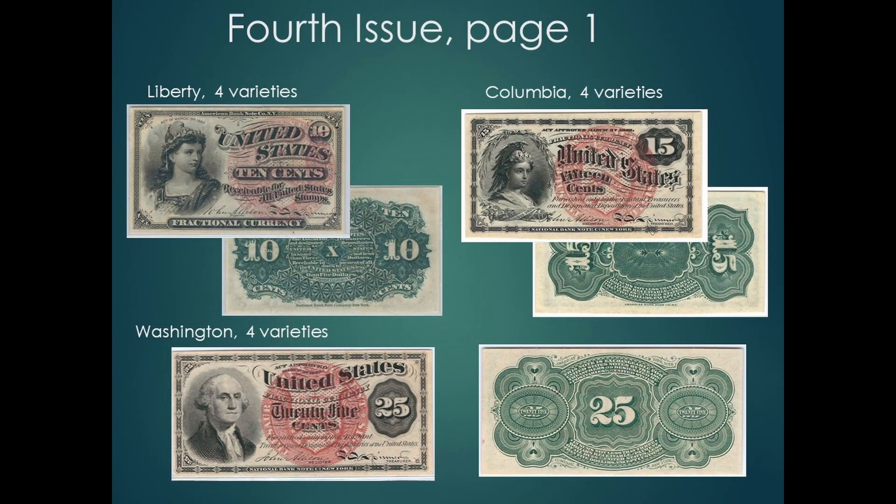The 10-cent note has a representation of Liberty, and the 15-cent a representation of Columbia. The Columbia note is the only 15-cent denomination in coins or currency in U.S. history. George Washington makes his last of nine appearances on the 25-cent note.